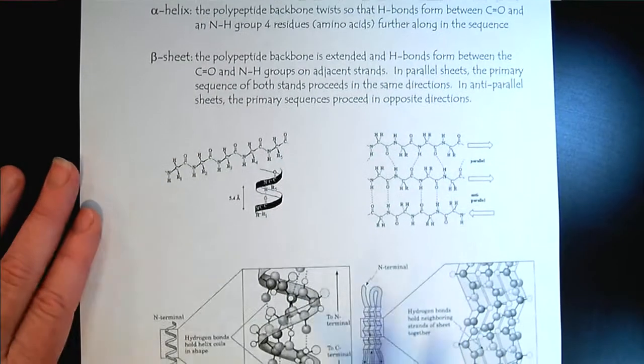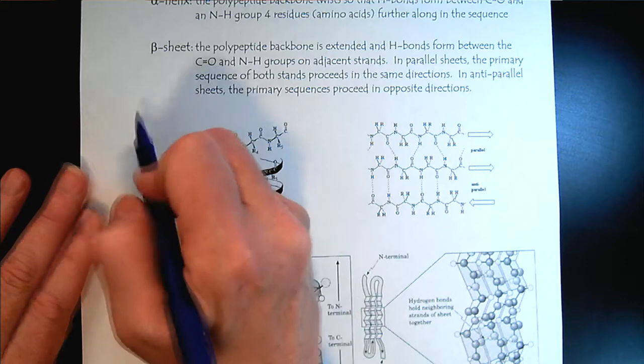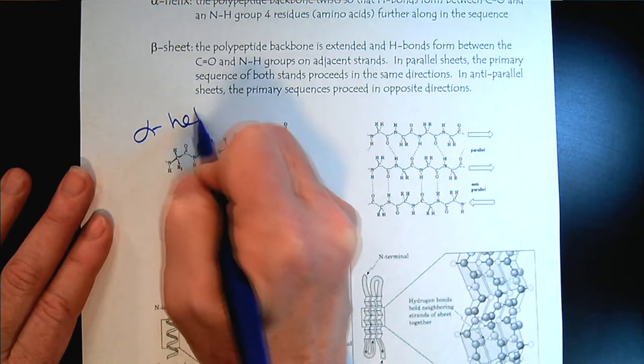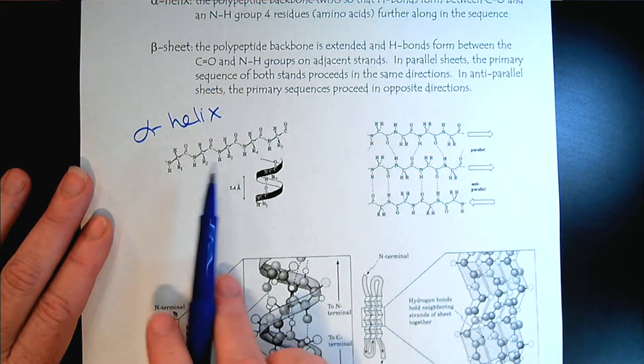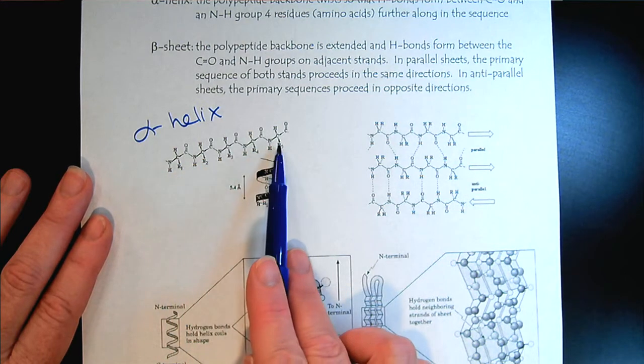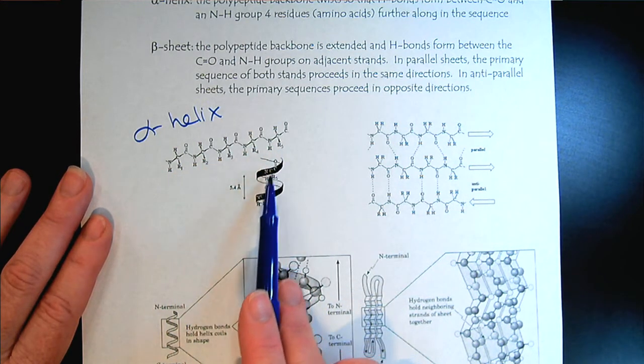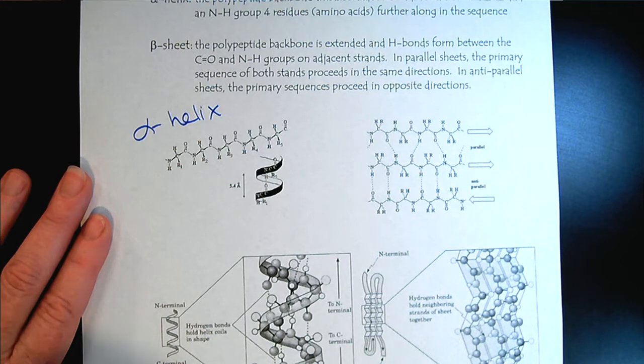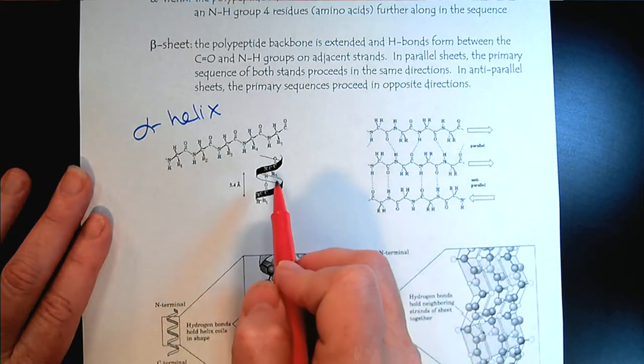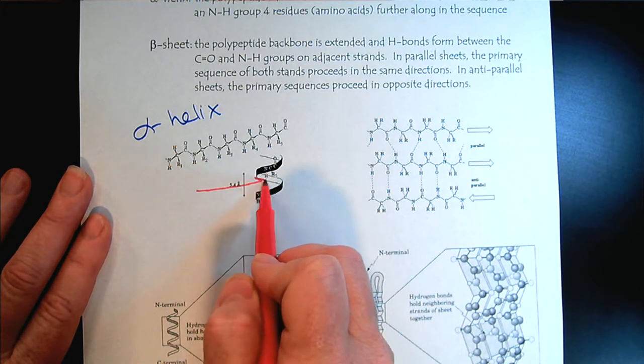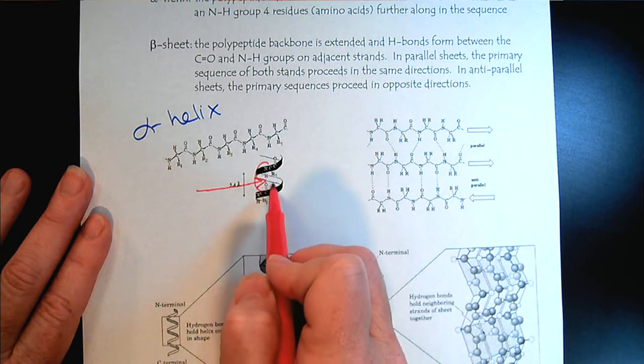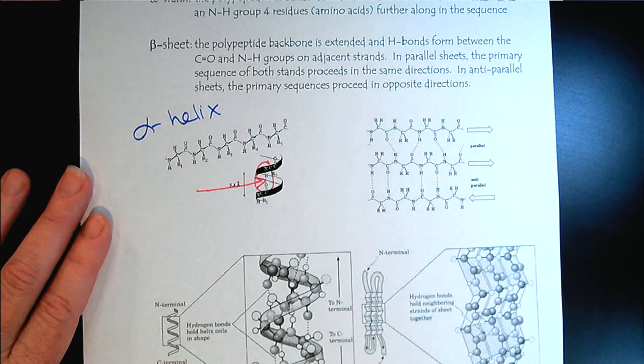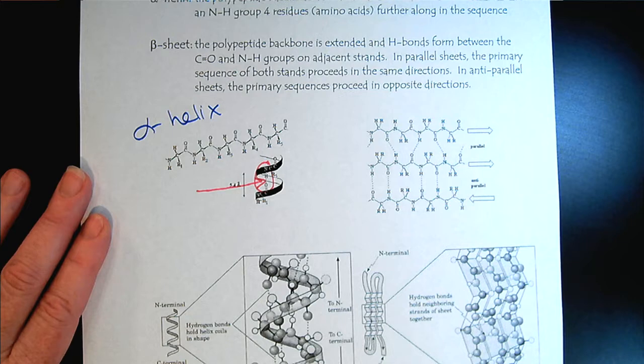On this left side, this is our alpha helix. We look at the primary structure, the amino acid sequence, and then we notice that as it spirals, we can get H bonding right here between the amine group of the amide and the carbonyl of the carboxylic acid.